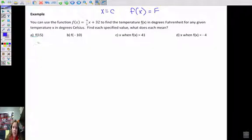F of 15, let's first talk about what they mean. F of 15, that would be when x is 15. X is degrees in Celsius. So f of 15 is going to be the degrees in Fahrenheit when Celsius is 15. So that's going to be that transfer.